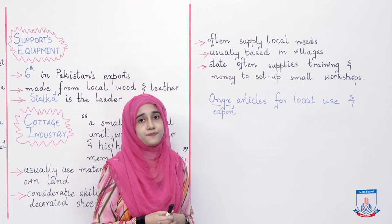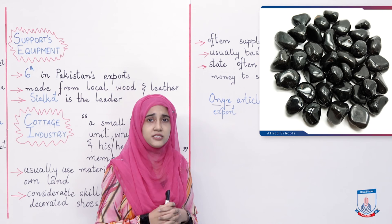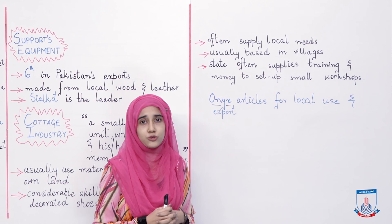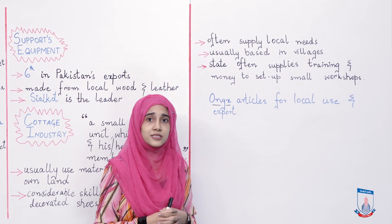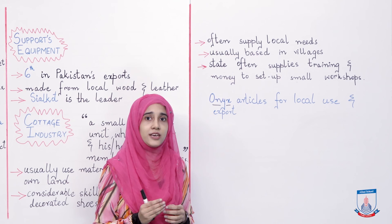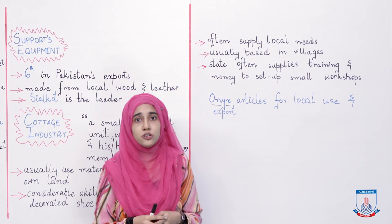Onyx articles are made for local use and export. Aapki book mein ek blue box hai 'info' ke naam se, usme onyx articles ka zikr hai. Onyx ek chhota gem stone hai, usually of black color, jo bahut khoobsoorat hota hai. Jewellery mein use kiya jata hai, aur decoration pieces mein bhi. Onyx Pakistan ka wahid aisa cheez hai jo export bhi ki jati hai — jiski banai hui jewellery aur decoration pieces baahir ke mulk bhi bheje jate hain.